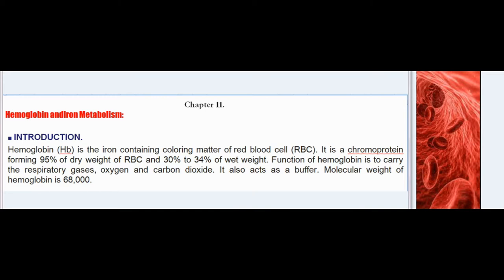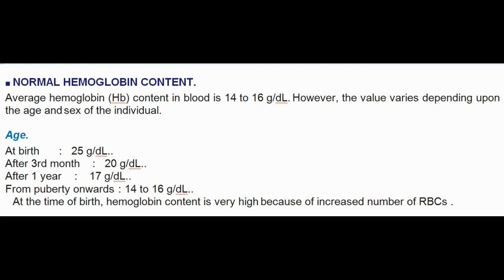Chapter 11: Hemoglobin and Iron Metabolism. Introduction: Hemoglobin (Hb) is the iron-containing coloring matter of red blood cells (RBC). It is a chromoprotein forming 95% of dry weight of RBC and 30 to 34% of wet weight. The function of hemoglobin is to carry the respiratory gases oxygen and carbon dioxide; it also acts as a buffer. Molecular weight of hemoglobin is 68,000.